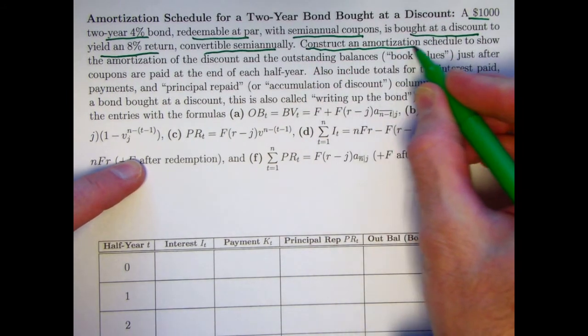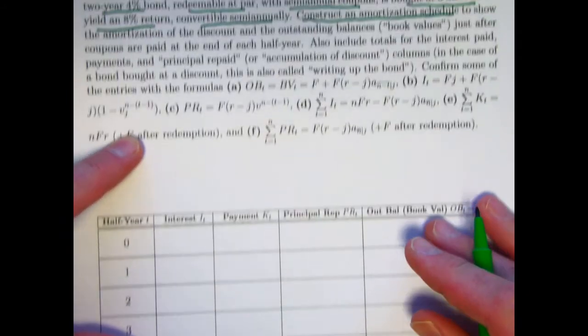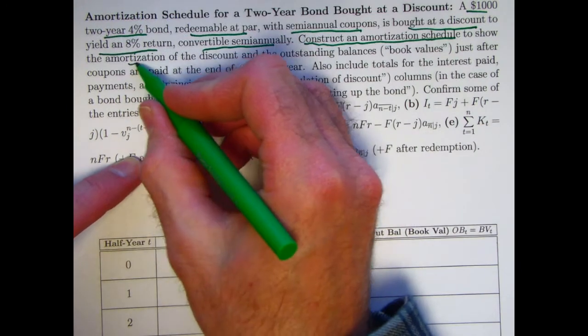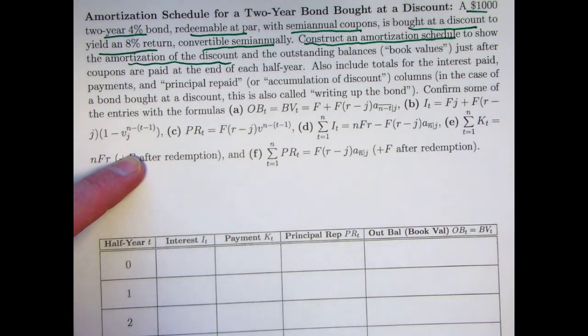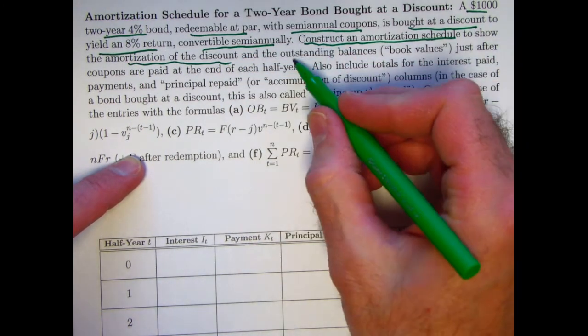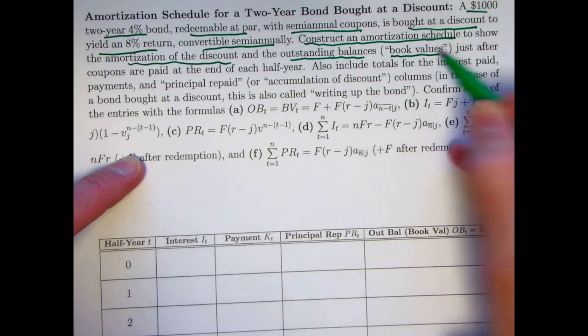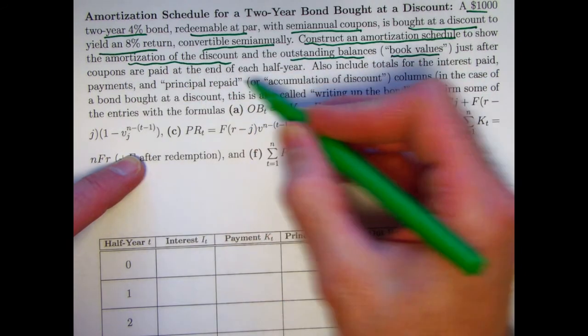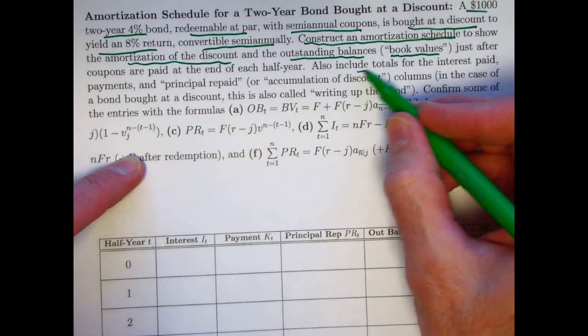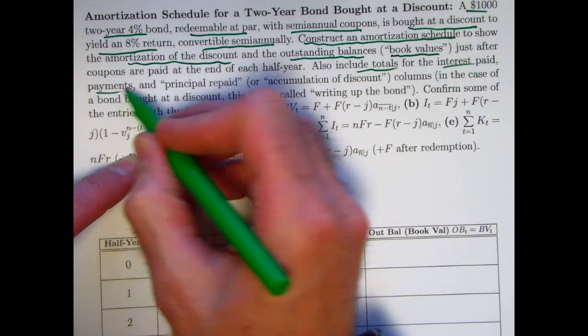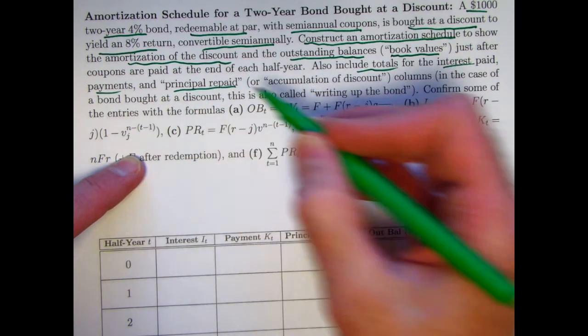Our goal is to construct the amortization schedule that you see below here, to show the amortization of the discount, how does it change over time. The outstanding balances, also called book values, just after coupons are paid at the end of each half year. Also include total for the interest paid, the payments themselves, and the principal repaid.